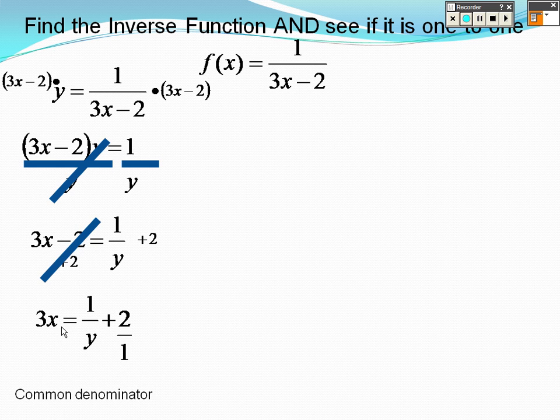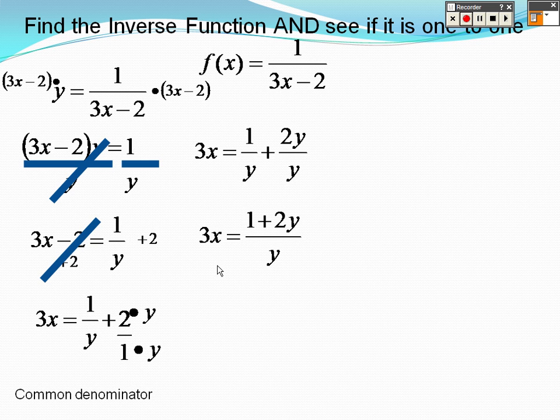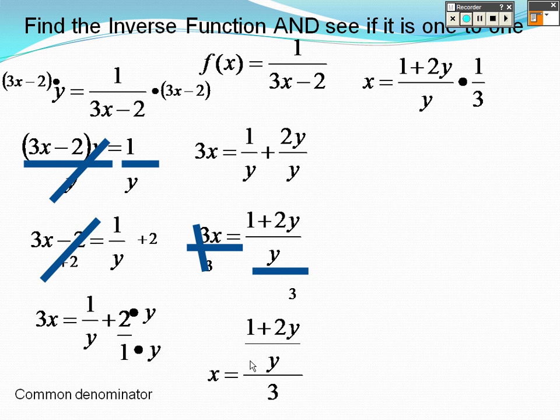Let's get a common denominator to push that all together. If I multiply both the top and the bottom there by y, then I can push the top together to get one thing. To divide by 3 on both sides, it's like saying just put a 3 on the bottom, instead of rewriting it. It's like saying multiply by a third, just put the 3 on the bottom. So it's x equals 1 plus 2y over 3y.